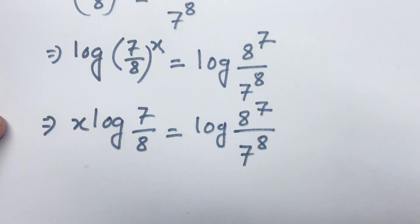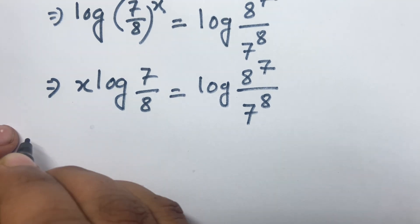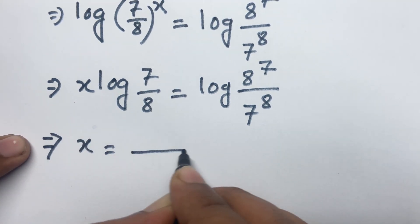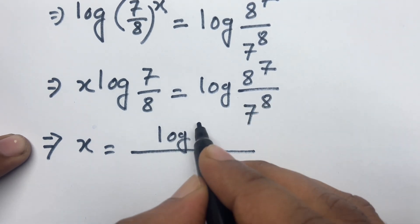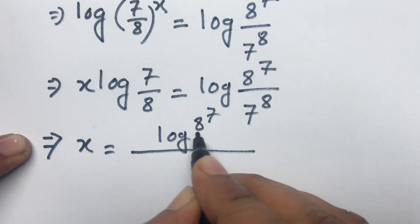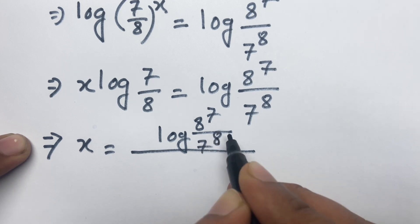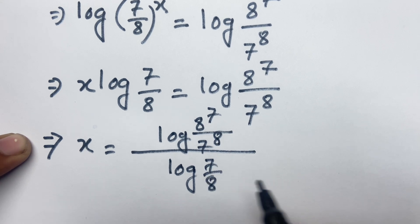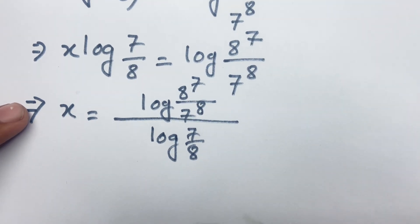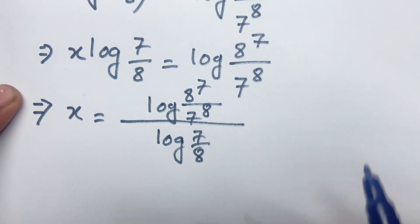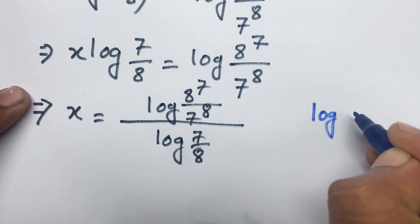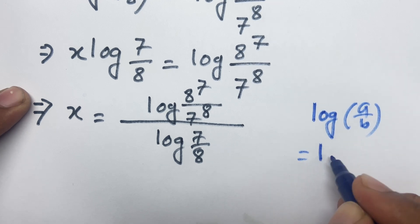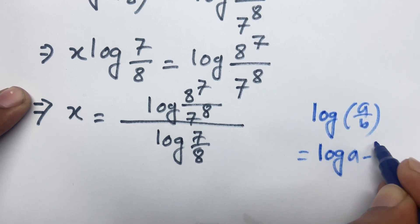Now I can say x equals log of 8 to the power 7 over 7 to the power 8, divided by log of 7 over 8. According to log rules, we know that log a over b equals log a minus log b.